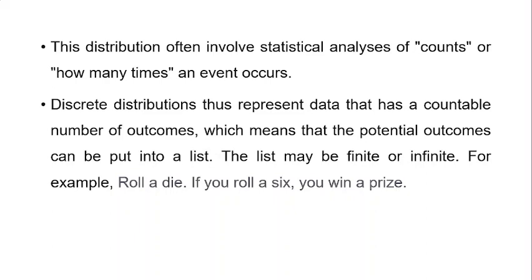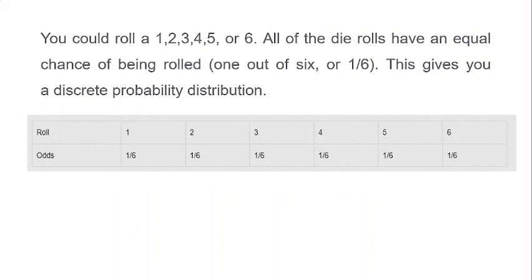Discrete distribution represents data that has a countable number of outcomes, which means that the potential outcomes can be put into a list. This list may be finite or infinite. For example, roll a die — if you roll a six, you win a prize. So you can roll a one, two, three, four, five, or six, and all of the die rolls have an equal chance of being rolled: one out of six, or one over six. This gives you a discrete probability distribution.